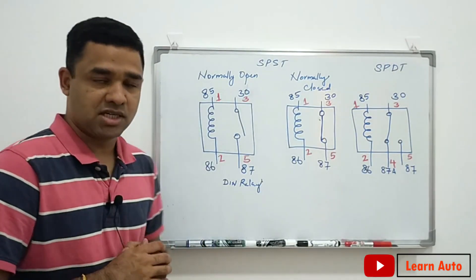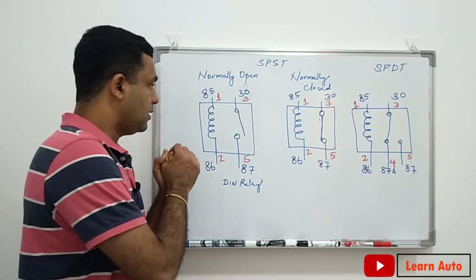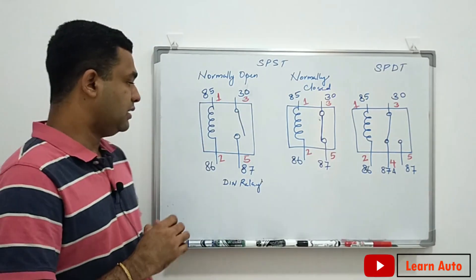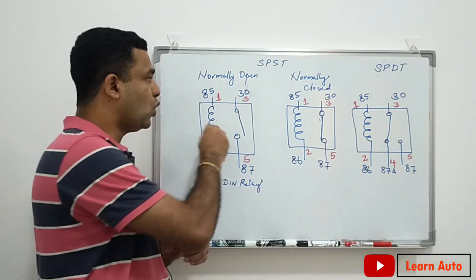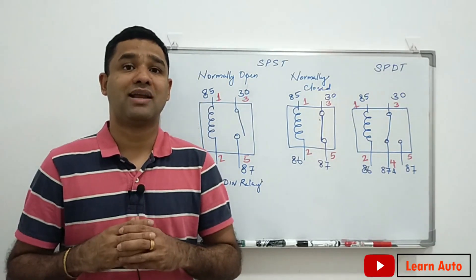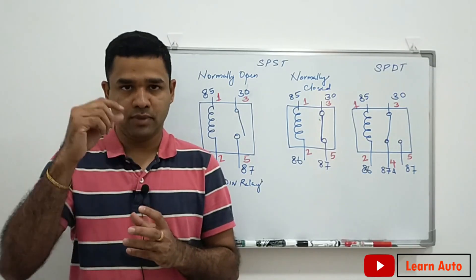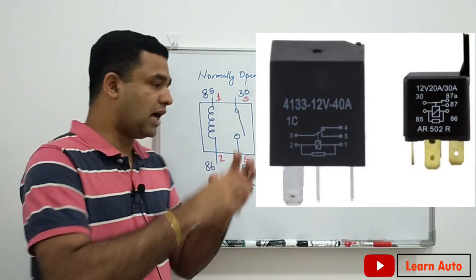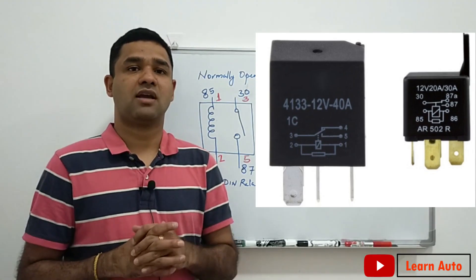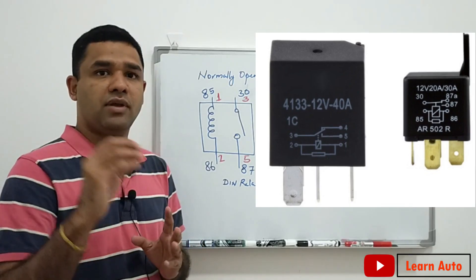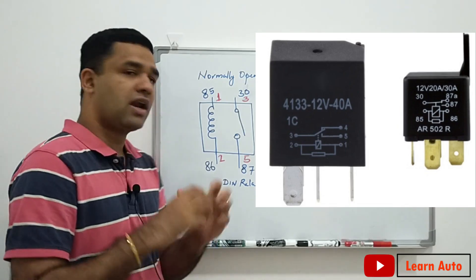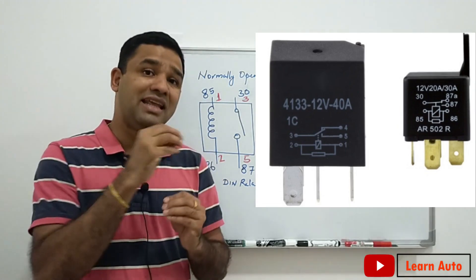We have the relay construction here. This is a four-pin relay. The pin numbers are arranged in the casing — this is a four-pin relay configuration.